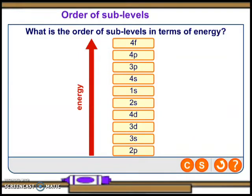What is the order of sub levels in terms of energy? You may pause the video to answer. Here's the answer: 1s, 2s, 2p, 3s, 3p, 4s, 3d, 4p, 4d, and 4f. If you got it correctly — good job!